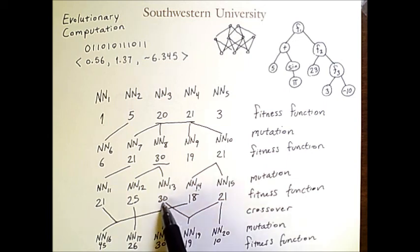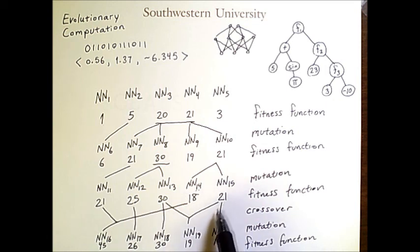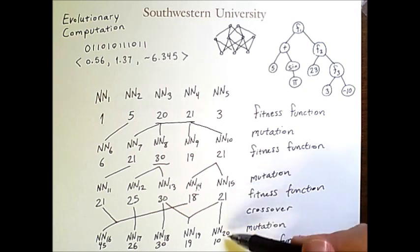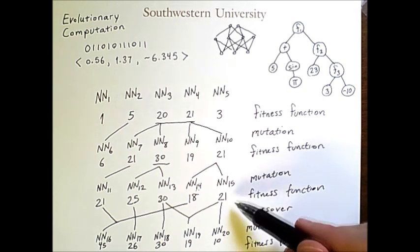Meanwhile, the crossing over of this very high scoring individual and this fairly high scoring individual produced an individual with a low fitness score. And even this neural network through asexual reproduction and mutation alone resulted in a very poor scoring individual.